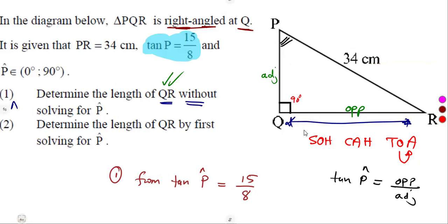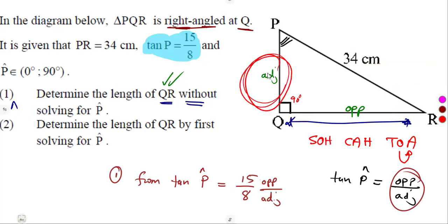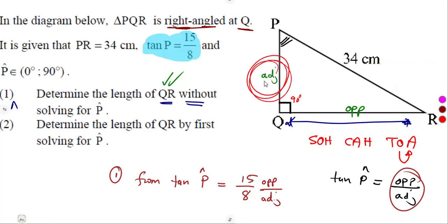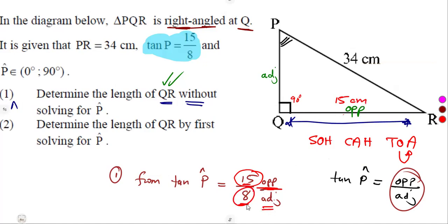PQ represents the adjacent side. So if the tan of angle P is given as 15 over 8, which is opposite over adjacent, it simply tells us that the opposite is represented by 15, so that becomes our QR. And the adjacent is represented by 8, so this is our PQ — 8 centimeters for the adjacent side.